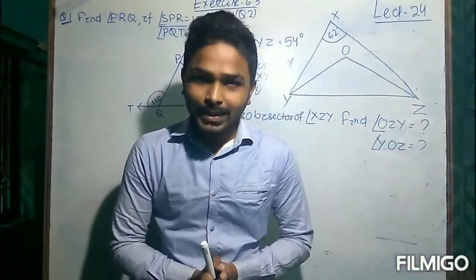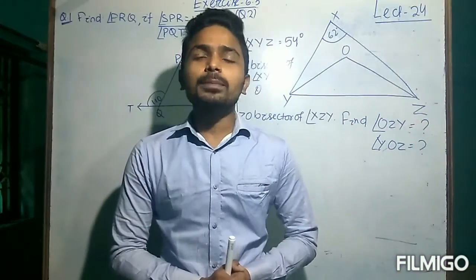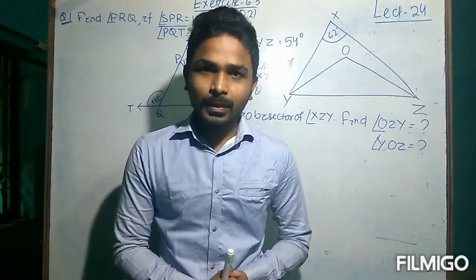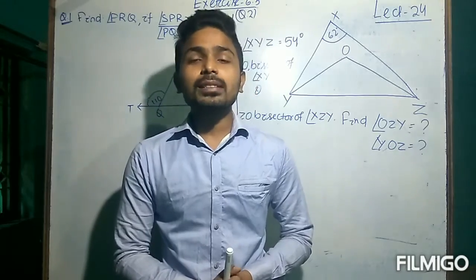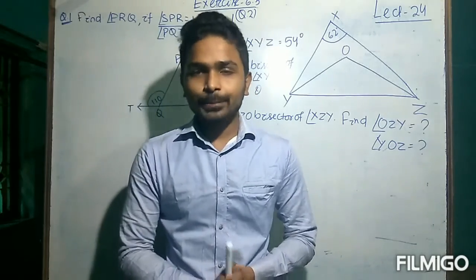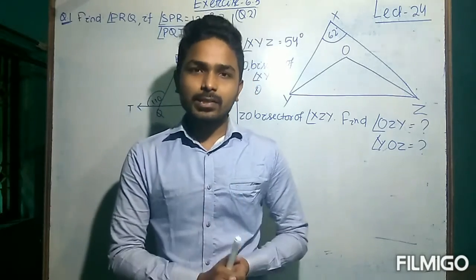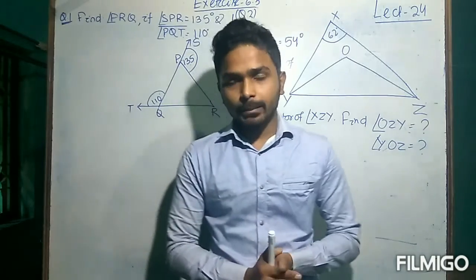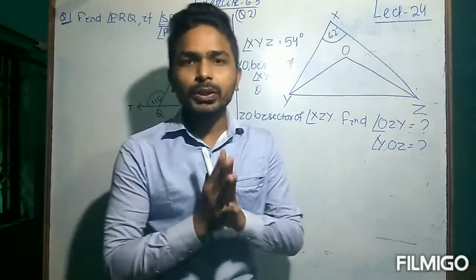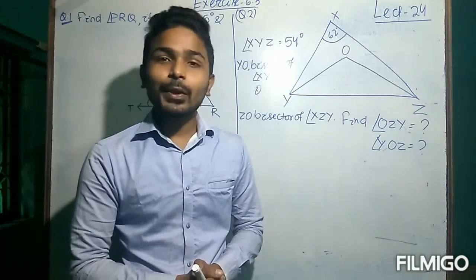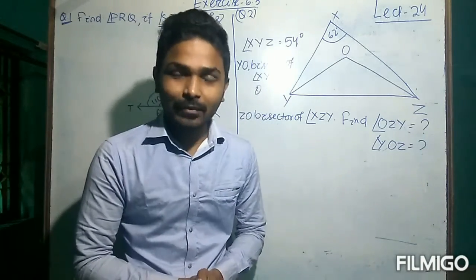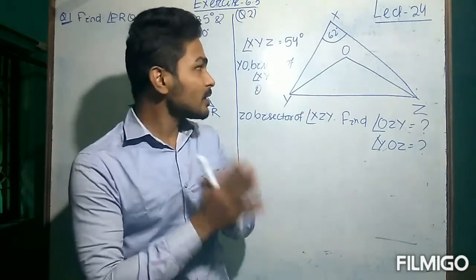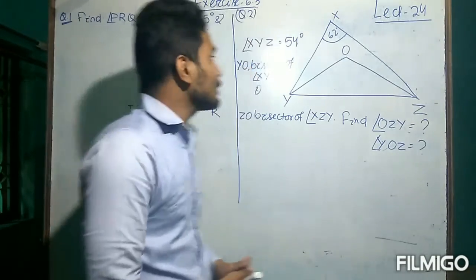Hello students, welcome back to lecture number 24 of chapter 6. In this lecture we are going to solve three questions from exercise 6.3, which is based on the triangle and its properties. Basically it is based on two theorems: theorem number 6.7 and 6.8. So here is the first question. Let us start.